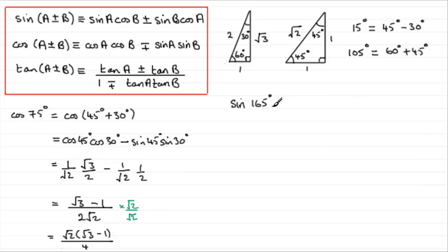Okay, if you had a go, let's see how you got on. First of all, how are we going to get 165 degrees out of these angles, 30, 60s, and 45s? Well, what we could do is think of this as the sine of 120 degrees plus 45 degrees.